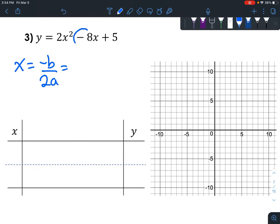and negative b is going to be the opposite of whatever's in front of the x. So we're going to put a positive 8, it always has a 2, and then you're going to fill in whatever is in front of the x squared. So this time it just happens to be 2 also, and so 8 divided by 4 equals 2.